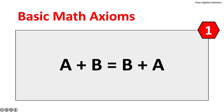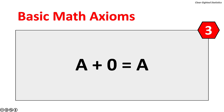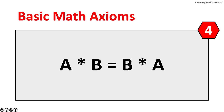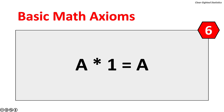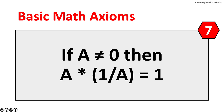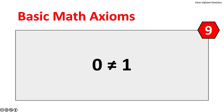Here are nine basic axioms: 1. A + B = B + A. 2. (A + B) + C = A + (B + C). 3. A + 0 = 0. 4. A × B = B × A. 5. (A × B) × C = A × (B × C). 6. A × 1 = A. 7. If A ≠ 0, then A × (1/A) = 1. 8. A × (B + C) = A × B + B × C. 9. 0 ≠ 1.